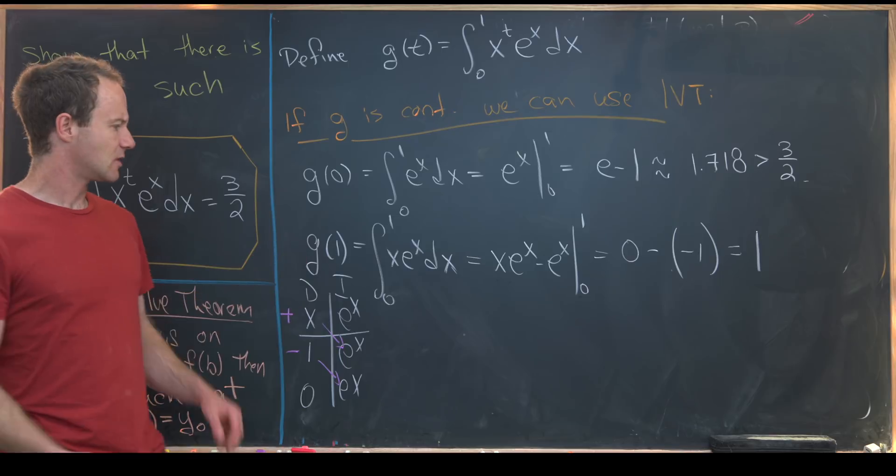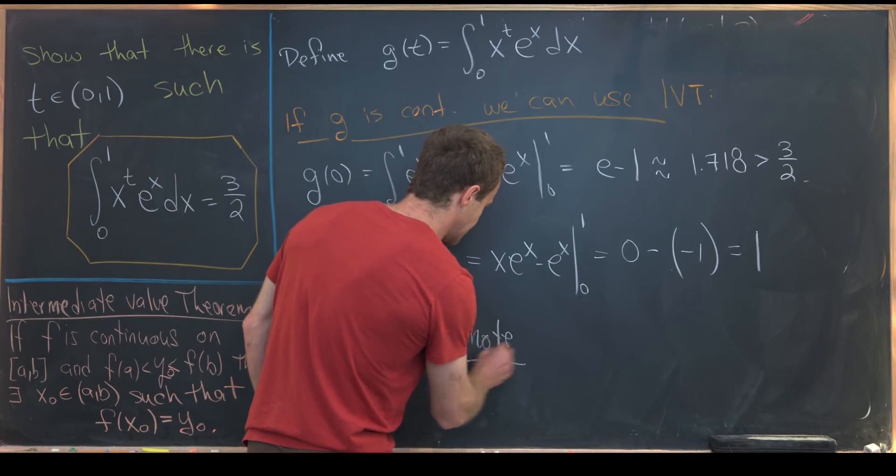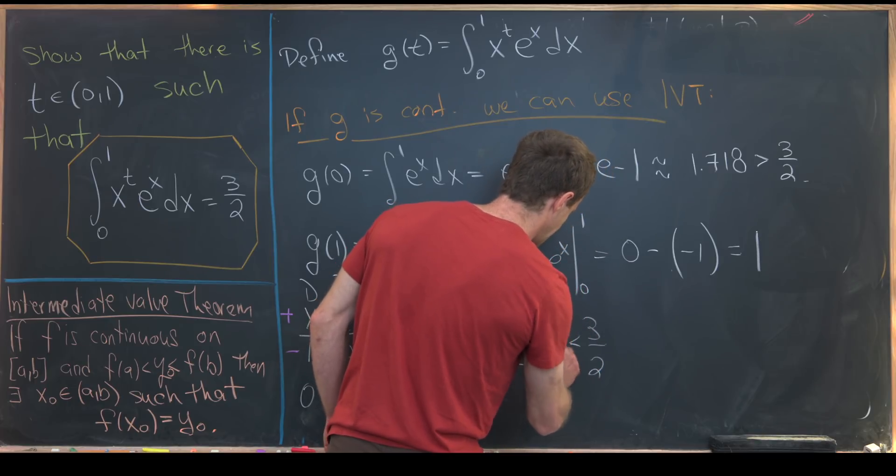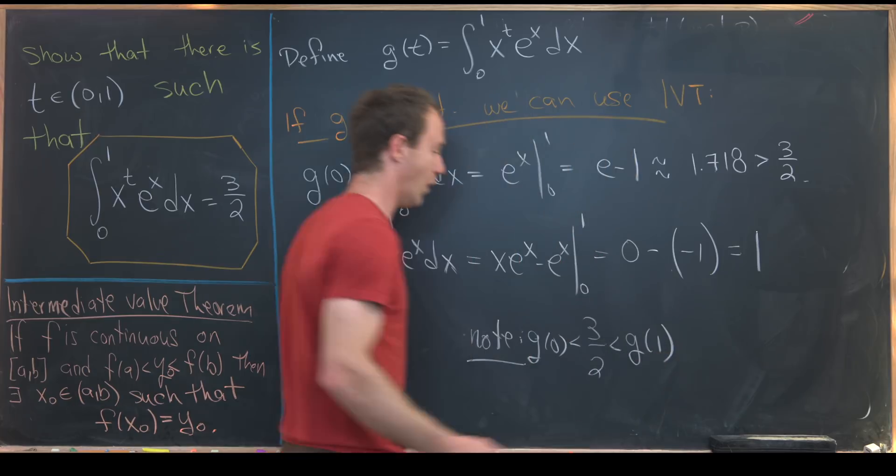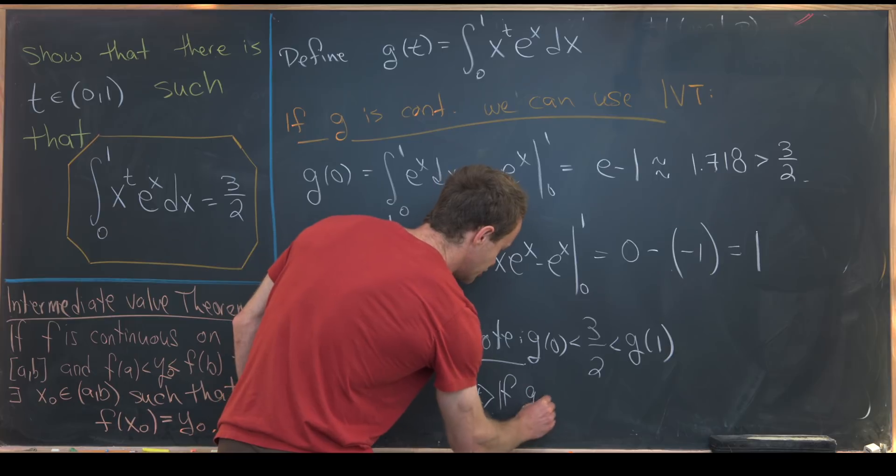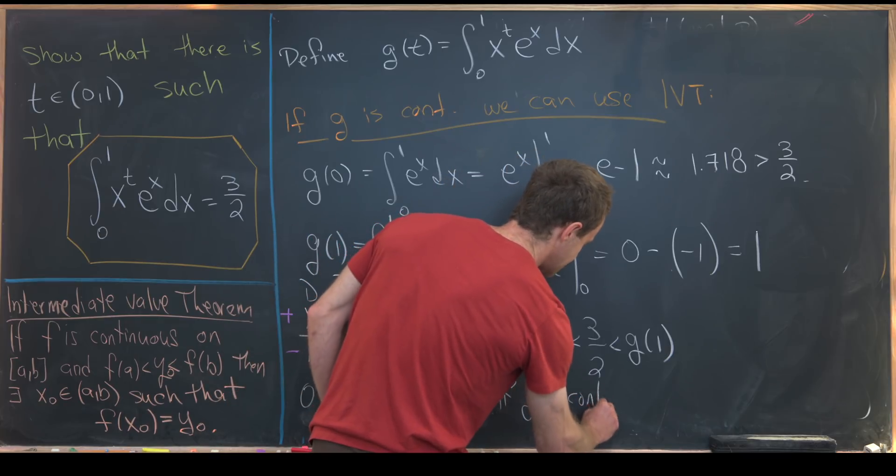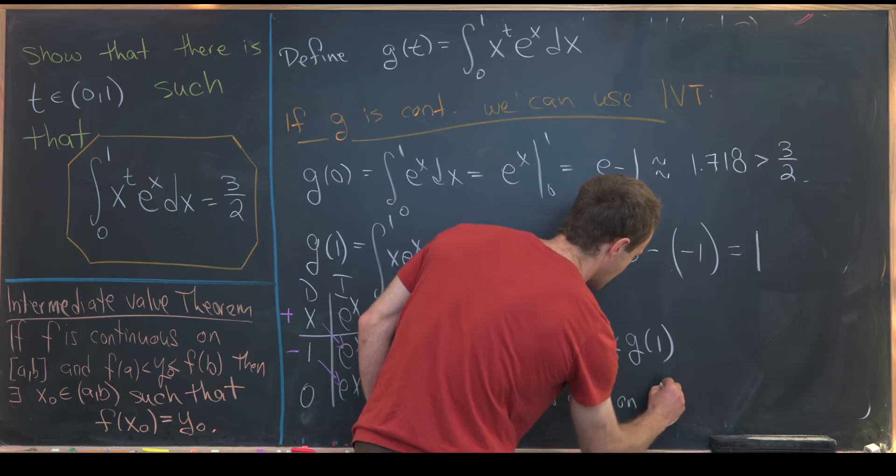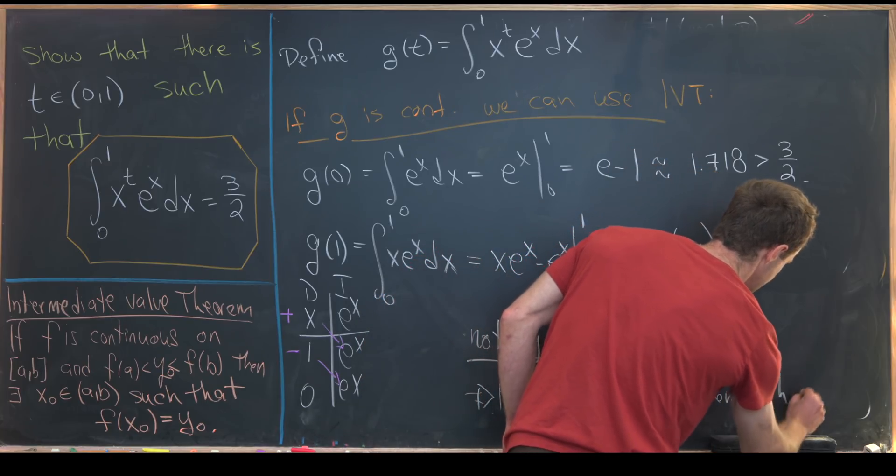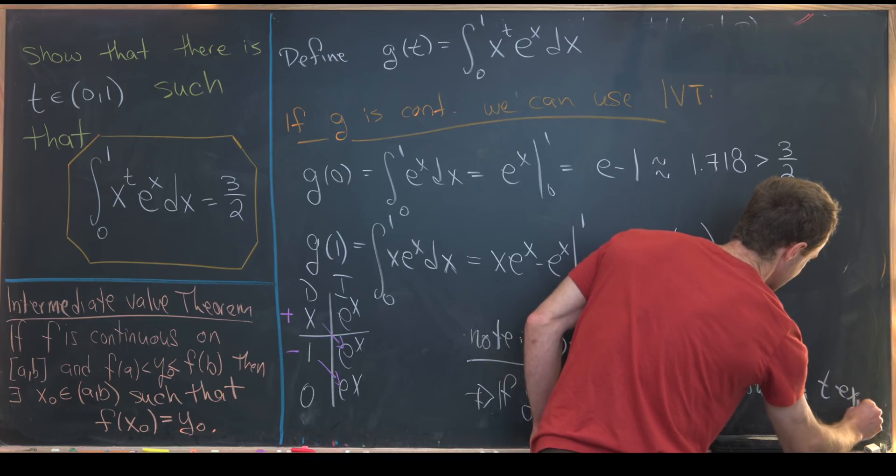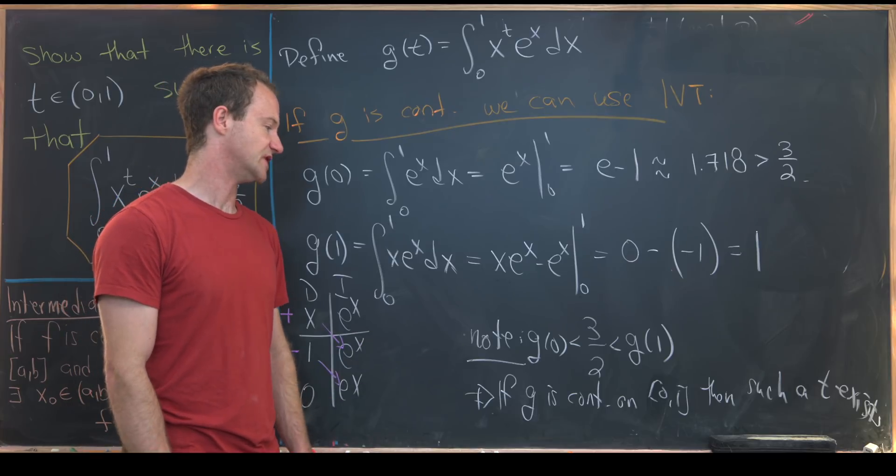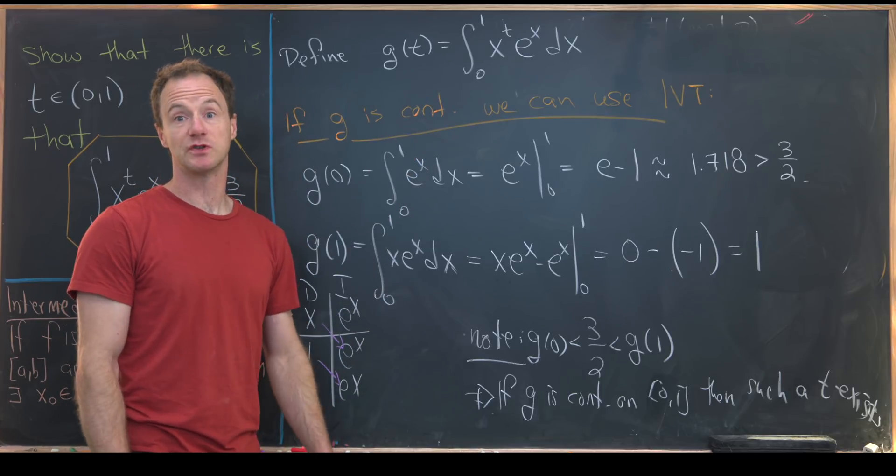Okay, but now let's see what that says. So note, we have three halves is strictly between g of zero and g of one. So that tells us if g is continuous on the interval zero, one, then such a t exists. So that means that the only thing that's left for us to do is show that g is continuous. So let's maybe clean up the board and we'll do just that.